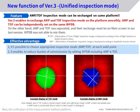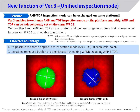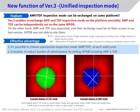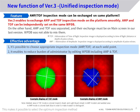Next, the unification of the measurement method platform, which is a major change from the conventional software, will be explained. The conventional software consists of TOF method and AMP method software, and it was not possible to quickly change the measurement method. With the latest software version 3, it is possible to switch between the TOF method and AMP method within the same inspection program by unifying the measurement method platform. This makes it possible to select the optimum inspection method for spot welds in various welded conditions.